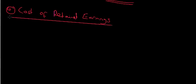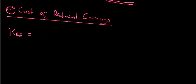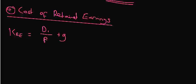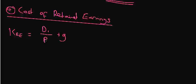The cost of retained earnings equals D1 over P plus G. Again, it's exactly the same as the previous two. The only difference here is there's no flotation cost. Why? Because there is no flotation cost on retaining your earnings. It's exactly the same thing.